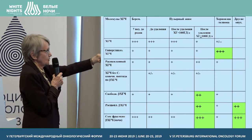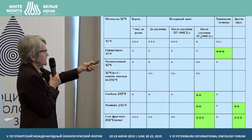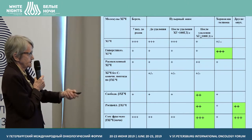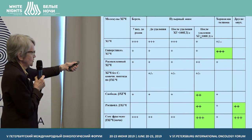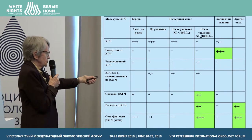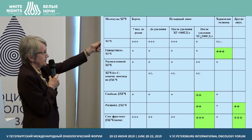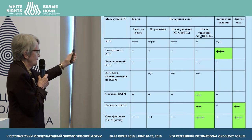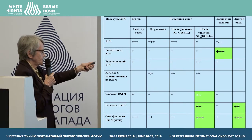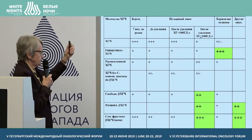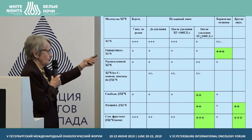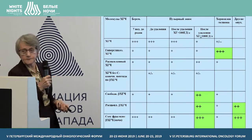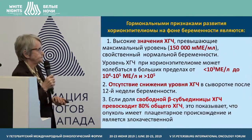This chart compares normal pregnancy, chorionepithelioma, and a mole which can transfer to chorionepithelioma. The split beta-HCG, free gonadotropin, and core fragment are higher in chorionepithelioma than in normal pregnancy.